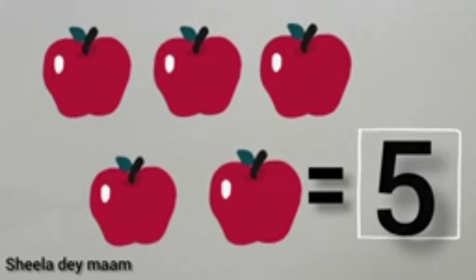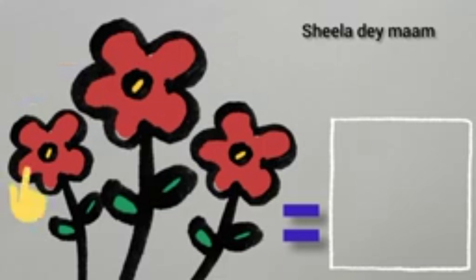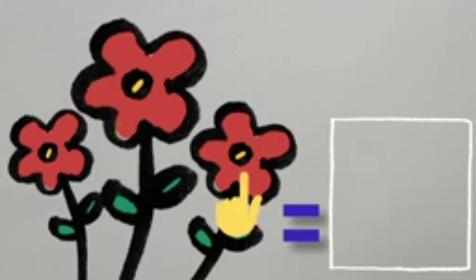5 apples. These are flowers. Kids, use your fingers to count the flowers. How many flowers are here? Yes, start counting. 1, 2, 3. 3 flowers are here.